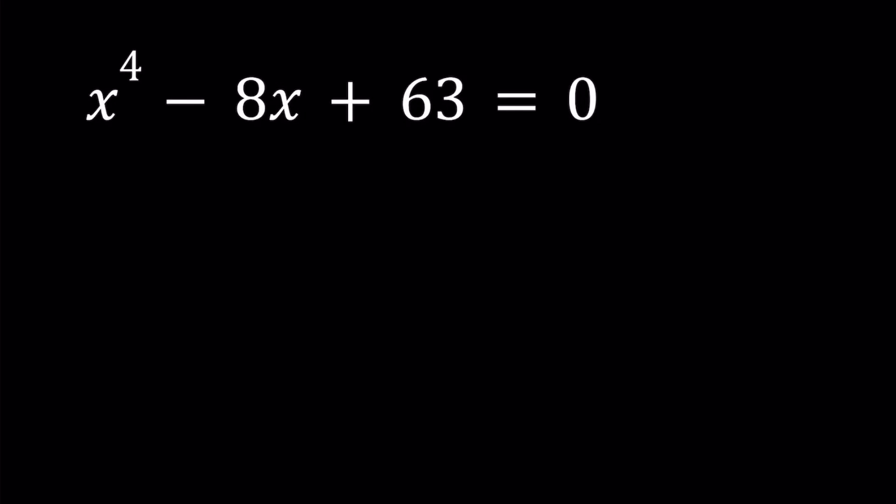Hello everyone. In this video, we're going to be solving a quartic equation. I'll be presenting two methods, and let's start with the first one. So we have x to the fourth power minus 8x plus 63 equals 0. Notice that I don't have an x cubed term and I don't have an x squared term. So some of the terms are missing, which is actually a good thing, especially for the first method.